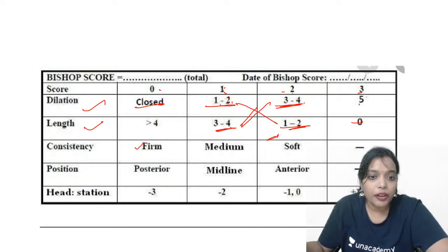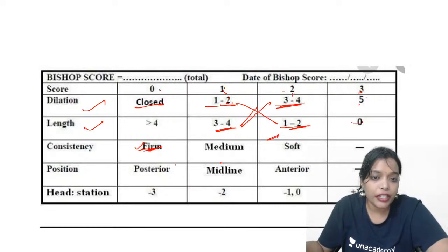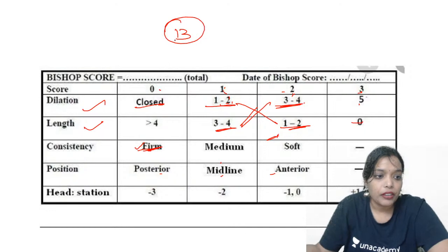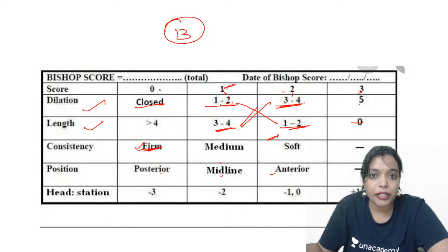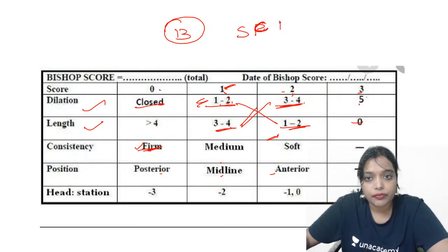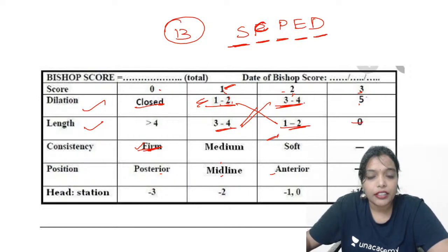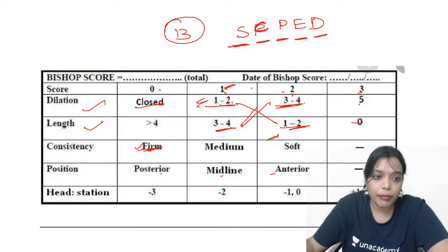For consistency: firm gives score 0, medium consistency gives score 1, soft gives score 2. For position similarly: posterior, midline, and anterior. Based on that you have the scoring system which goes up to 13. Remember the parameters by the mnemonic SPEED — S-C-P-E-D — that is station, consistency, position, effacement, and dilatation.